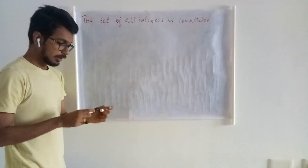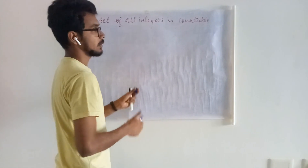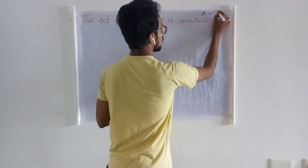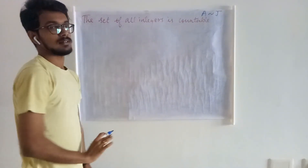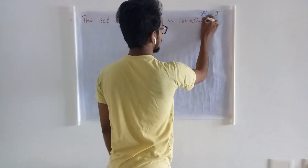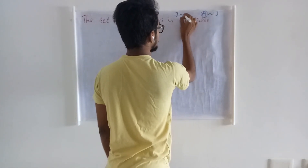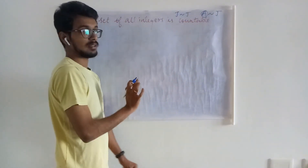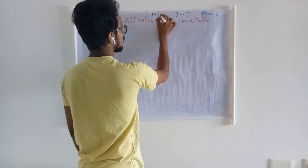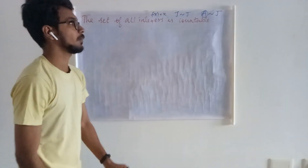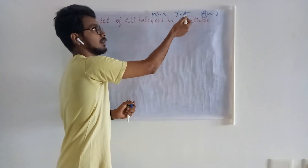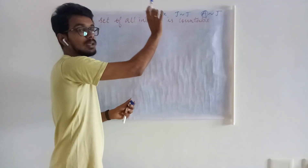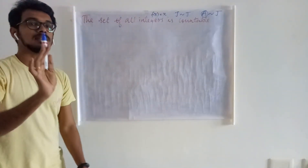We know that while defining countability, we specified that if a set can be put in one-one correspondence with the set of all positive integers, it is countable. If I consider the set to be the set of all positive integers itself, I can define f(x) = x, and this turns out to be a one-one and onto mapping. Therefore, the set of all positive integers is a countable set.